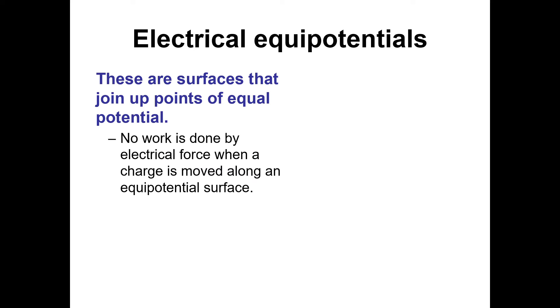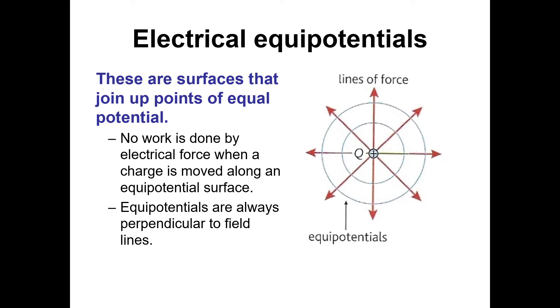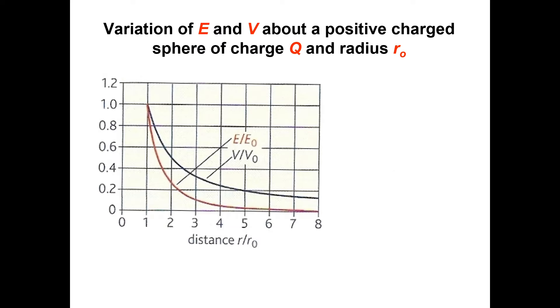We're looking at equipotentials, this time for electric fields. Similar to gravitational fields. They're surfaces that join up points of equal potential, and no work is done by an electric force when a charge is moved along the equipotential surface. Really important, especially if you've got to draw either the equipotential lines or the field lines. The equipotential lines are always perpendicular to the field lines.